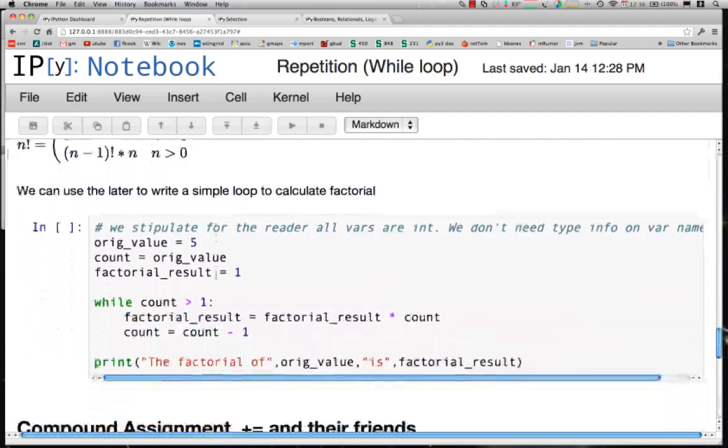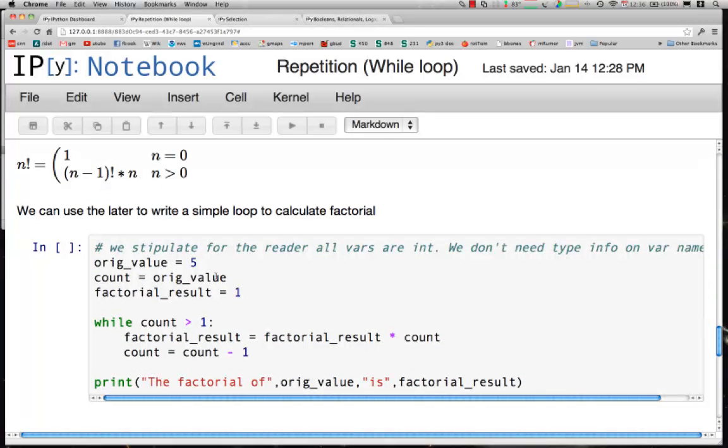Here is our factorial calculation. We take in an original value, say 5. We remember that. We set a count variable equal to that original value and we start our factorial value at 1. And as long as count is greater than 1, which starts out to be the original value, the factorial result is equal to the factorial result which starts at 1 times the count value which starts with the original value 5.